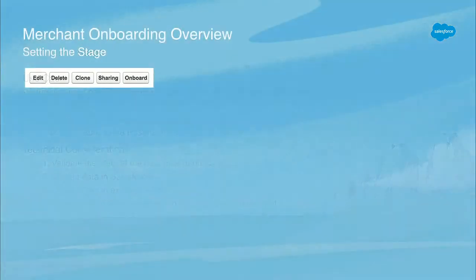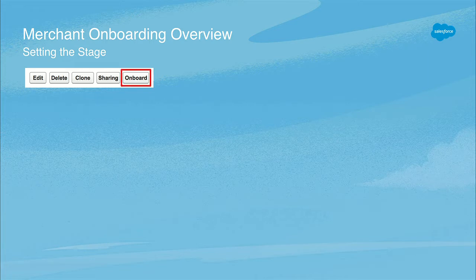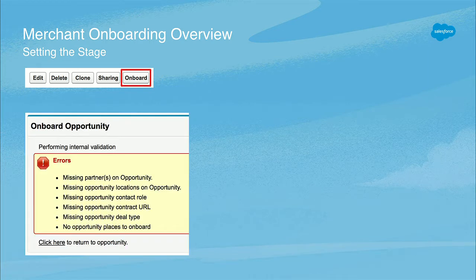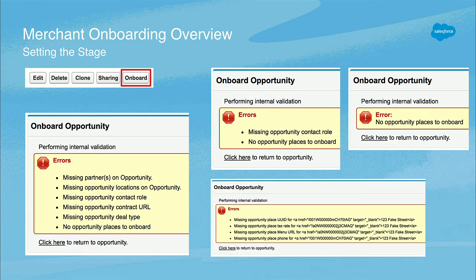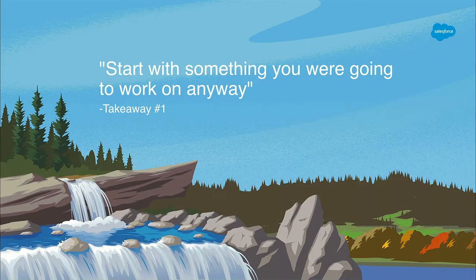So that's the use case. When I started at Postmates, this is the experience they had with merchant onboarding. On the opportunity, you have a set of buttons. They click the onboard button and they get something like this — they get a bunch of errors. They need to go back to the opportunity, fill out some more fields, and then they do it again and get more errors. What I wanted to highlight is that, if applicable, start with something you're going to work on anyway. I saw some pain in this area, and I saw an opportunity to improve the process.